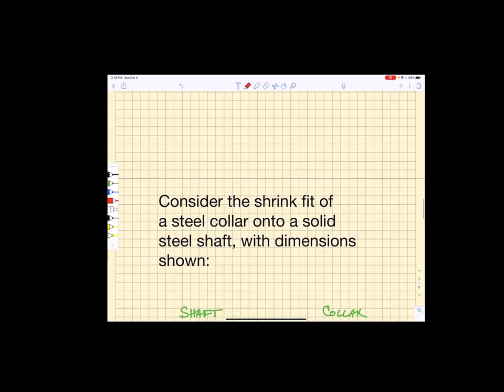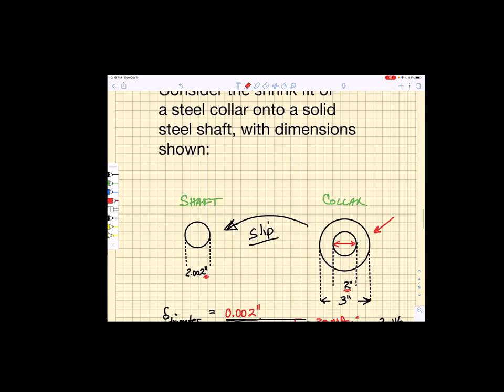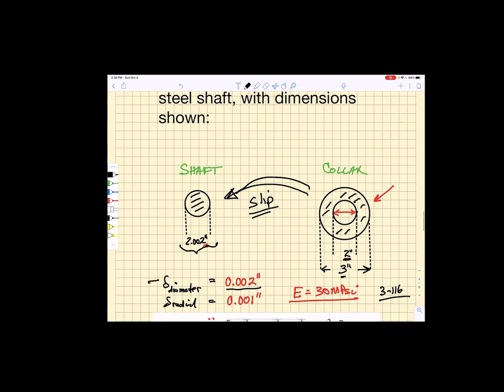Now that you know a little bit about that let's consider the shrink fit of a steel collar onto a solid steel shaft where I have the dimensions shown. That is I have a solid steel shaft here and I want to slip a collar over here onto that shaft. The shaft has diameter 2.002 inches. The collar has an inner diameter of 2 inches and an outer diameter of 3 inches. So the difference in diameter is if I try to slip that collar onto that shaft then I am going to have to overcome diametral interference of 0.002 inches.